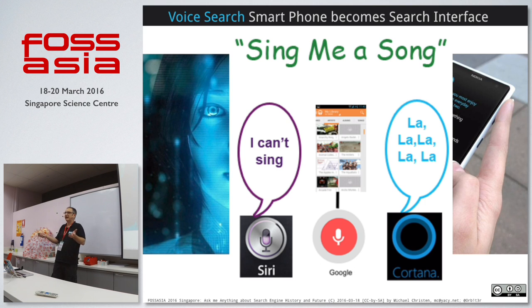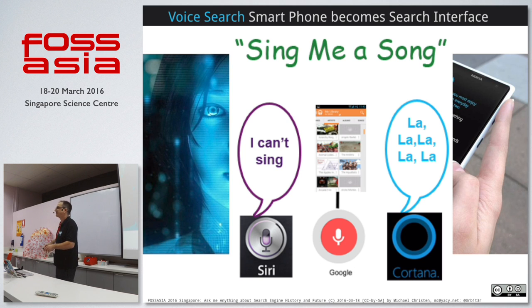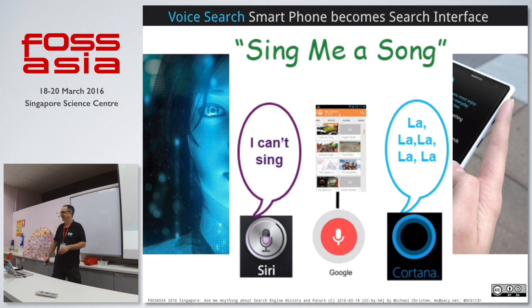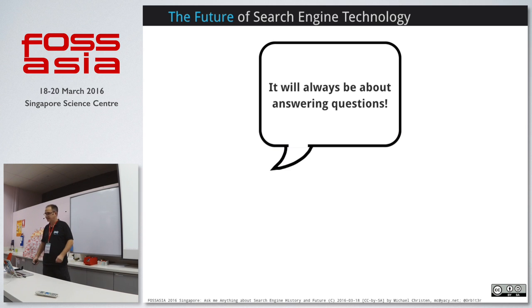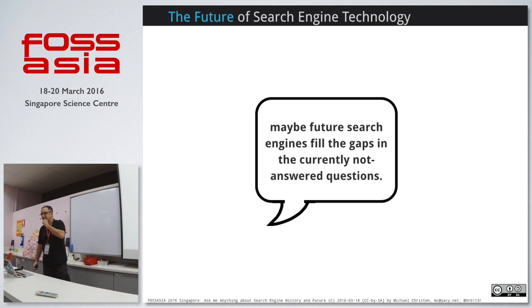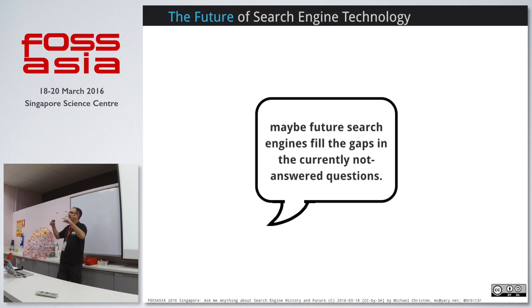People don't really know what to ask these devices. Is anybody using these devices in a serious way? Mostly for weather. So this is it: search is always about answering questions. Every question you have should be answered. The future search engine will fill in the gap of the unanswered questions — that's my guess. I cannot say what it will look like or which device it uses, but it will answer the previously unanswered questions.